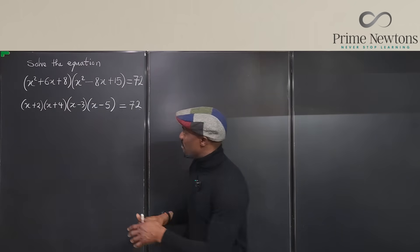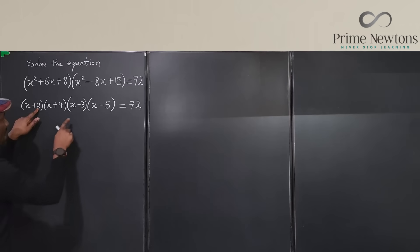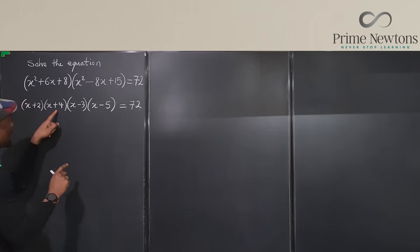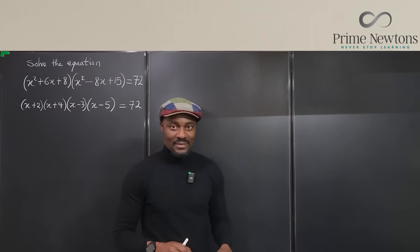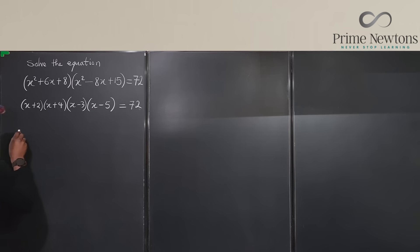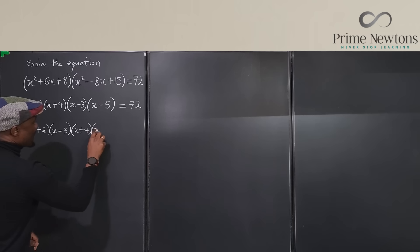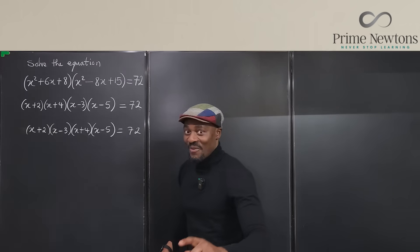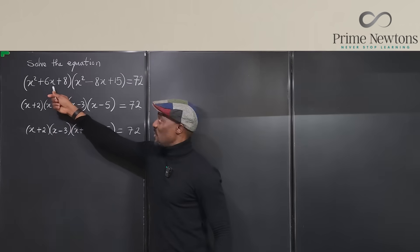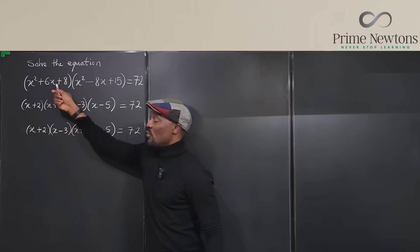So I'm going to say that if I put two and minus three together, two minus three is minus one, four minus five is also minus one. That is the combination that I need. Because we can rewrite this as x plus two times x minus three times x plus four times x minus five equals 72. Now, the great benefit of this is, you know, this was how we started. We can now try to go back to how we started.